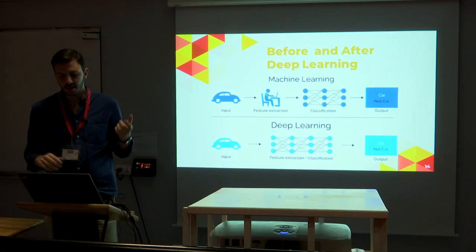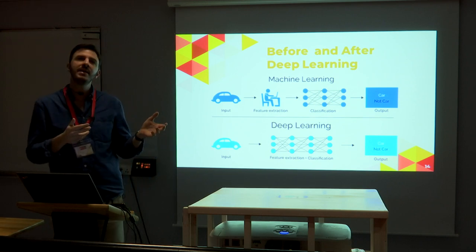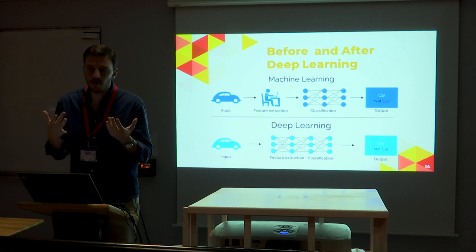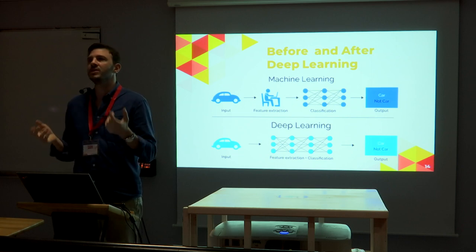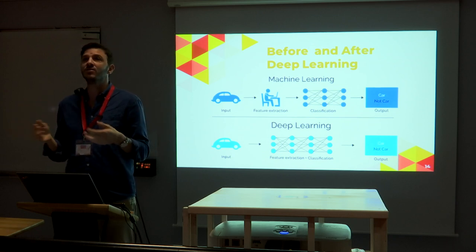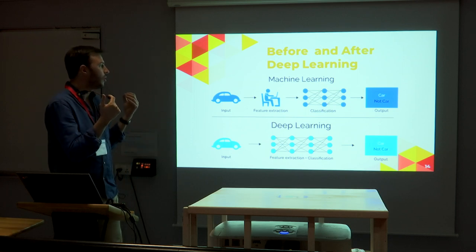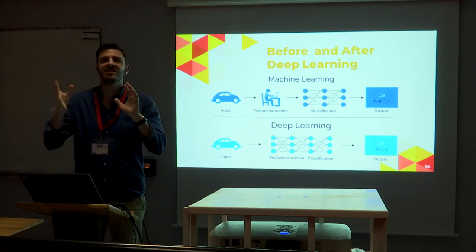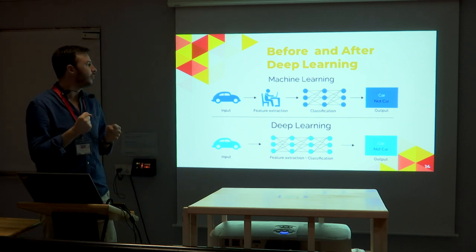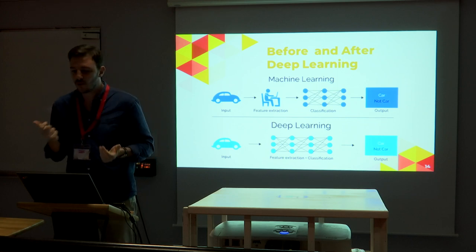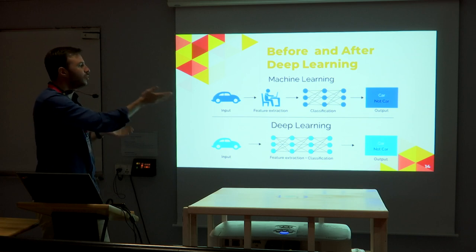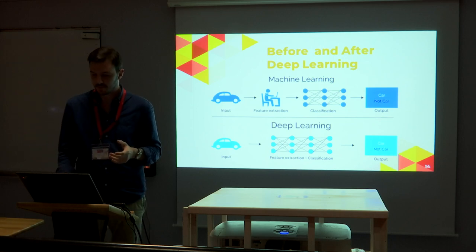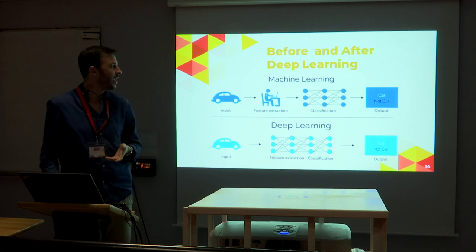The idea of ConvNets is to change how we work with images. Before deep learning, we hired specialists for feature extraction, generating many KPIs to feed a model — for example, to detect if it's a car or not. Deep learning changes this: it moves the feature extraction inside the model itself and lets the model optimize in the best way, iterating many times until reaching a really good solution.